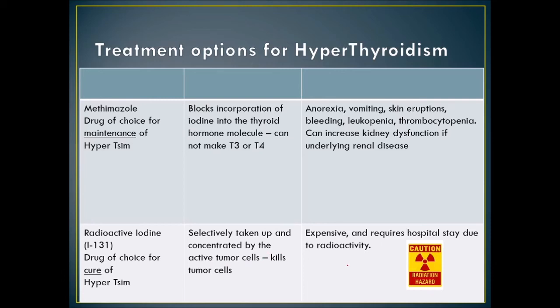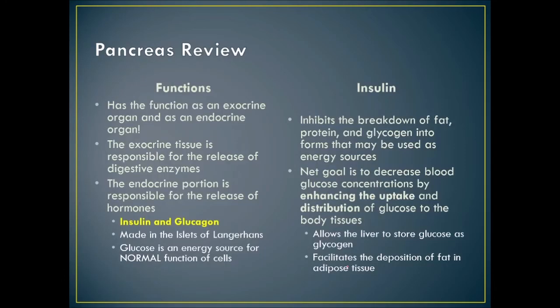The net goal of insulin is to decrease glucose concentration by enhancing uptake and distribution of glucose to body tissues. This allows the liver to store glucose as glycogen and facilitates fat deposition into adipose tissue. Diabetes mellitus is the inability or impairment of insulin secretion by the pancreas, resulting in hyperglycemia, which destroys organs and causes infections.